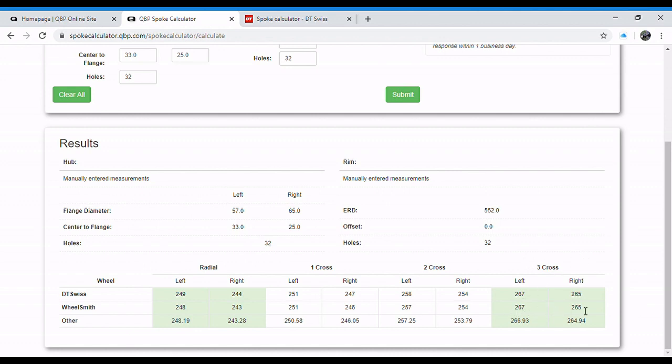Here's our dimensions we need. You just order your spokes to that. If you don't have a spoke cutter.